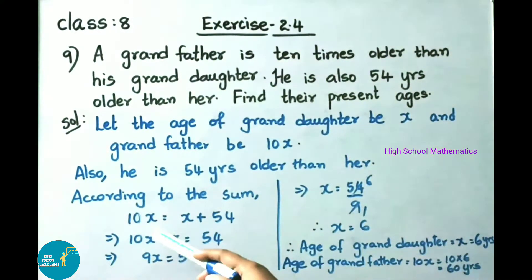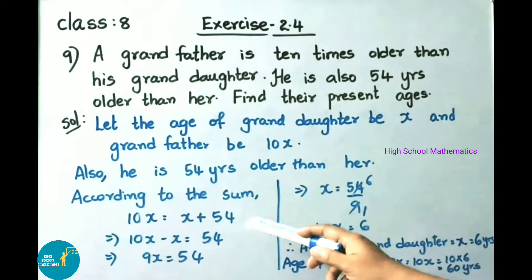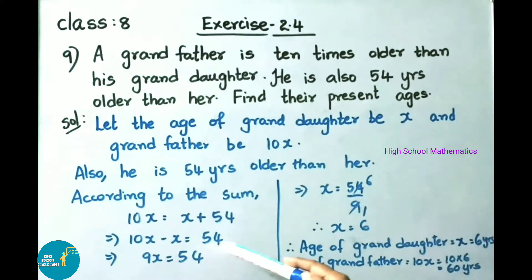grandfather's age, that is 10x, equals to granddaughter's age x plus 54. That implies 10x minus x equals 54. 10x minus x, that is 9x, equals 54. That implies x equals 54 by 9. 9 sixes are 54.